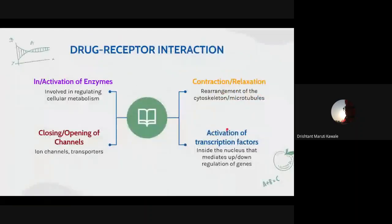Next, let's look at drug-receptor interaction outcomes — what processes take place once secondary messengers are activated. There are four major processes. First is activation or inactivation of enzymes — enzymes involved in regulating cellular metabolism, synthesis or breakdown of molecules, and activation of transcription factors. Enzymes are activated either by phosphatases or by kinases. Second is contraction and relaxation — as seen with acetylcholine acting on the muscle cell causing contraction.